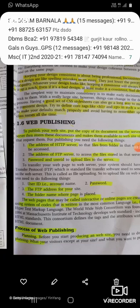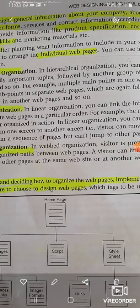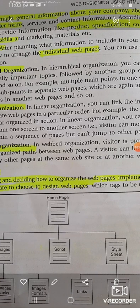The web pages will be arranged using a diagram. A page can contain a script, text, and images. Images can include image maps, image links, and image formats. Style sheets can be inline or linked.